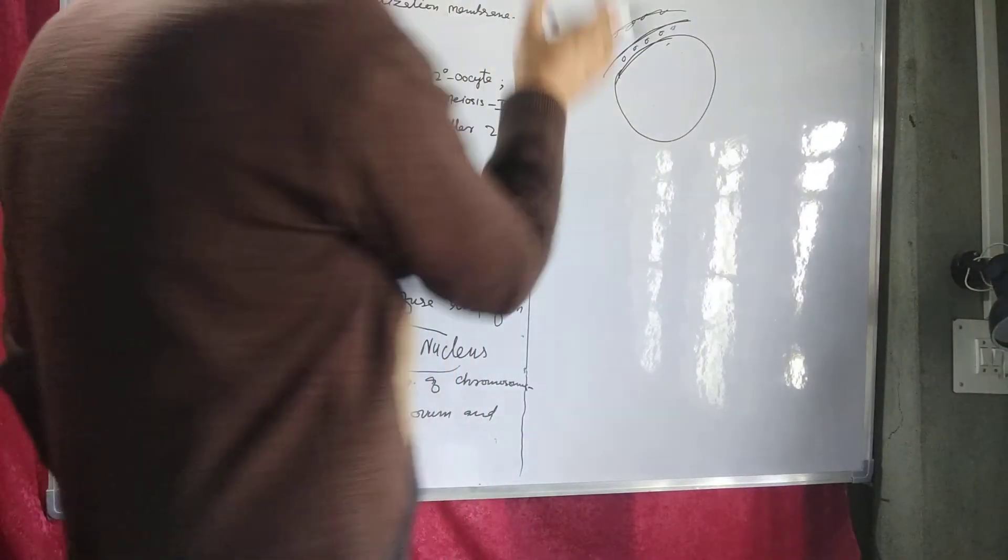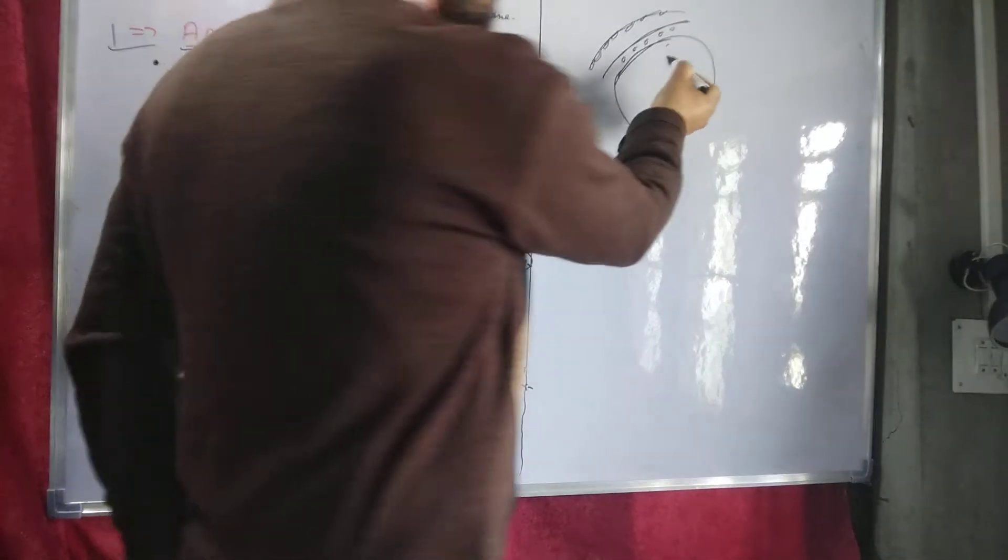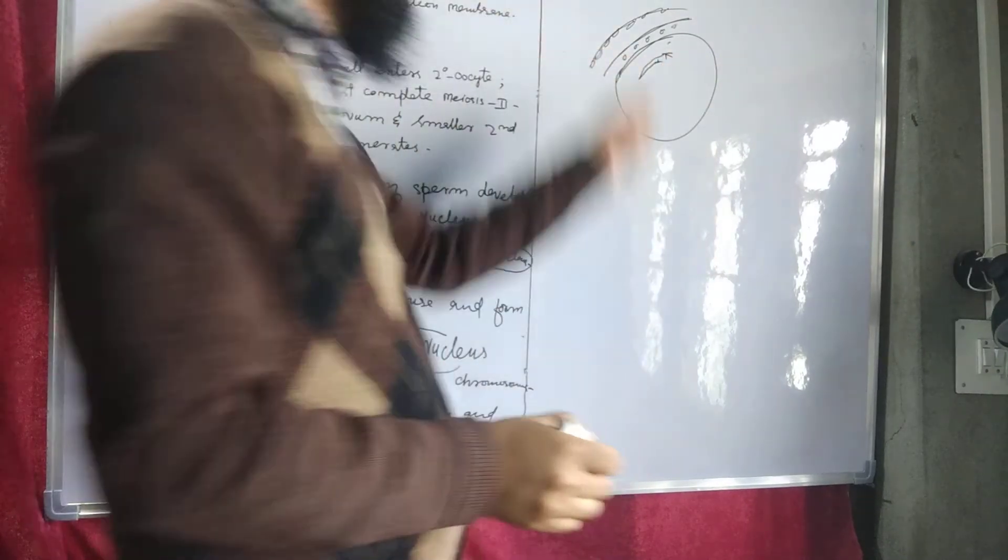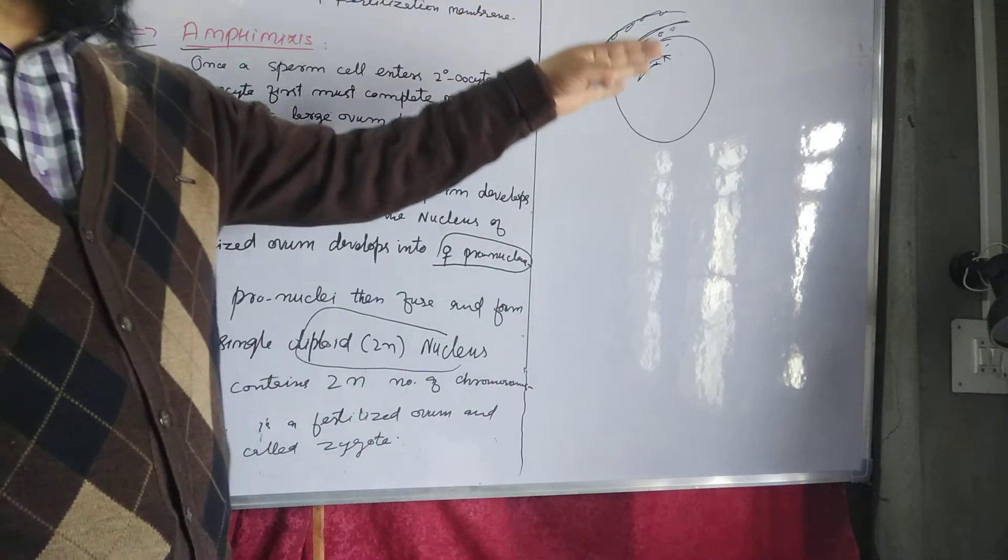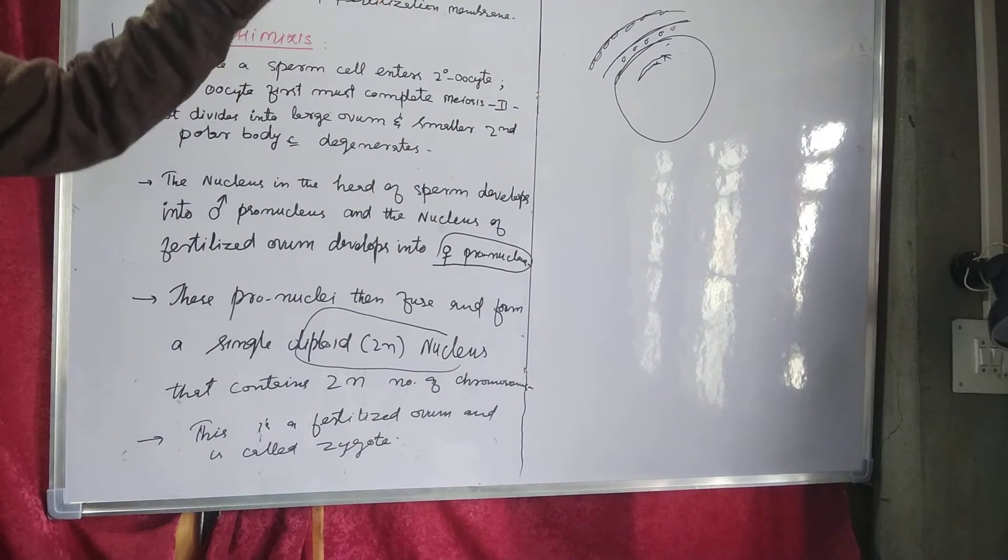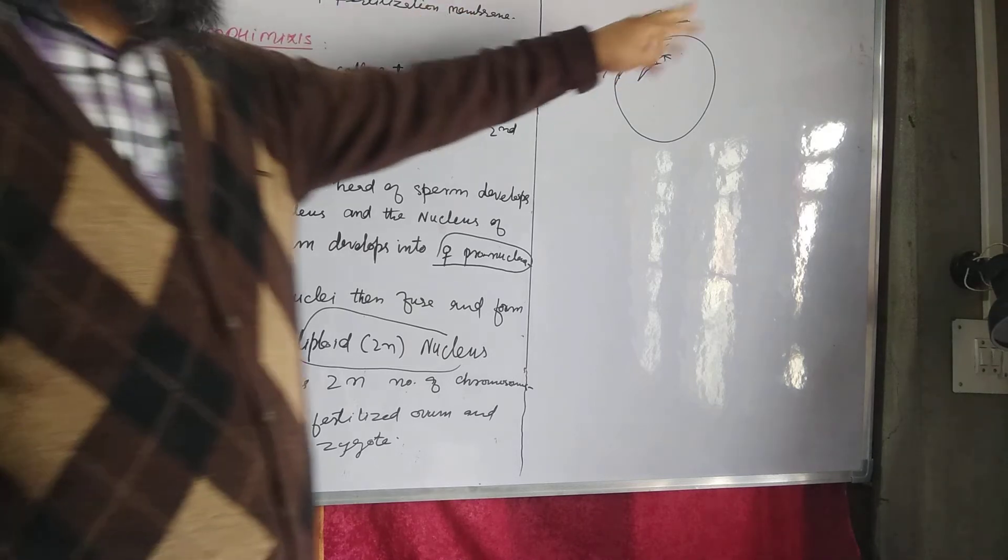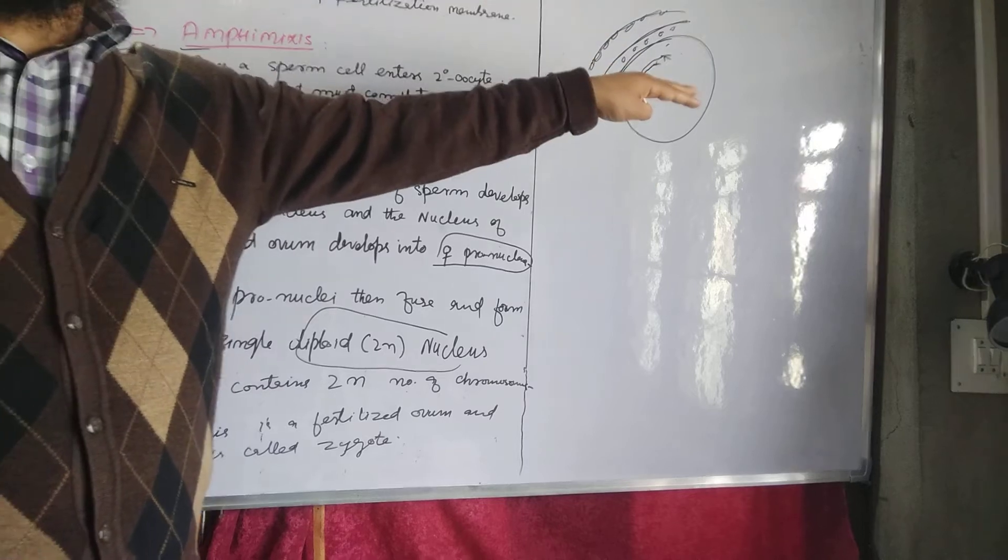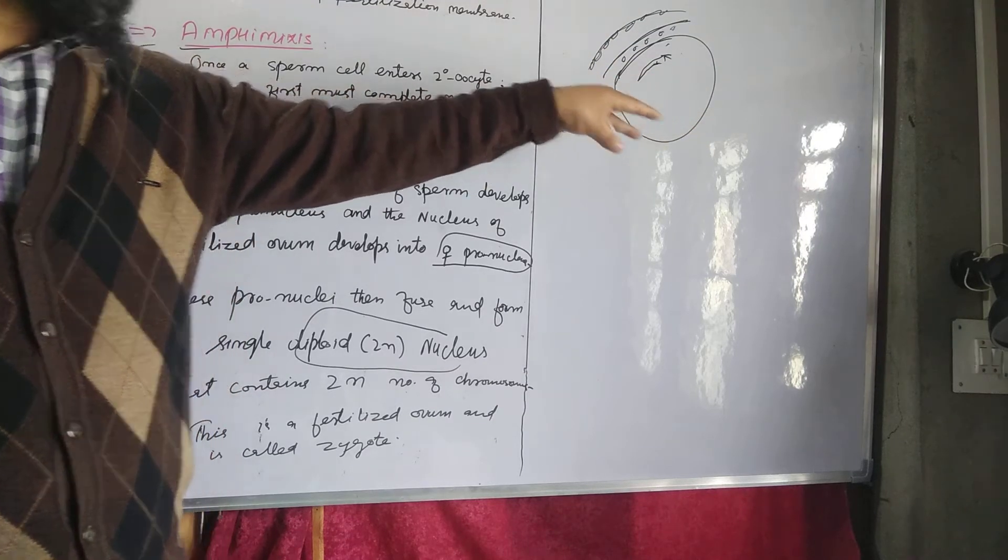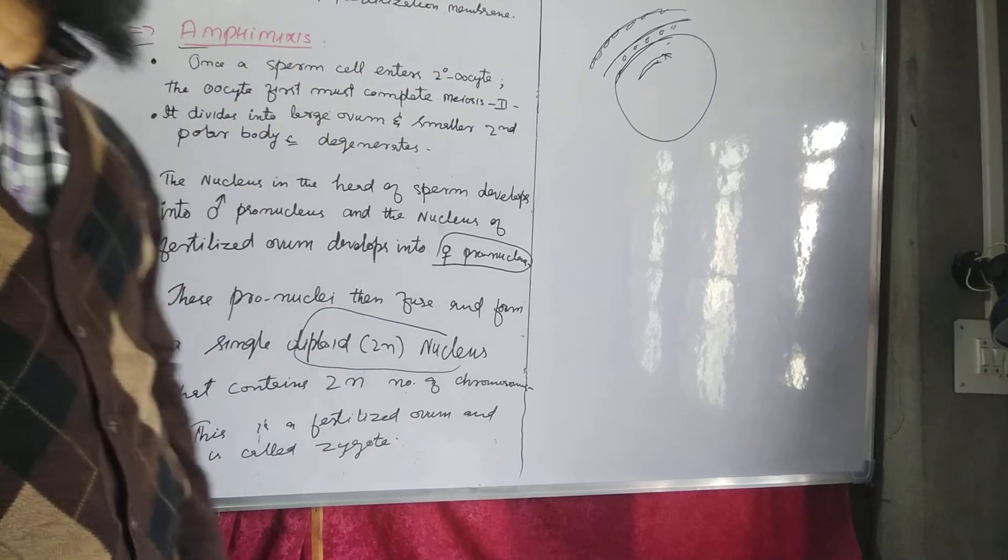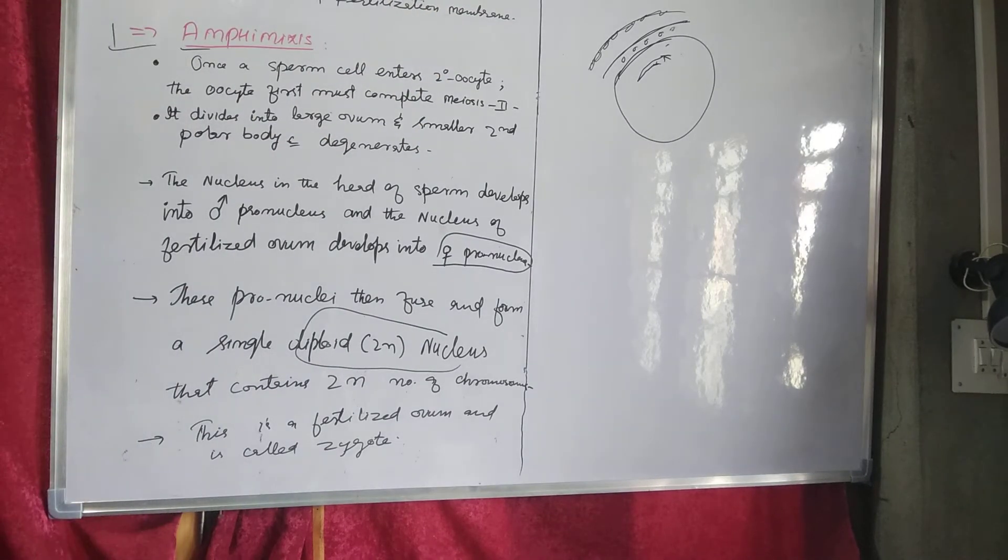And this is the smooth endoplasmic reticulum that releases calcium ions. So due to the influx of calcium ions, this sperm has entered into the secondary oocyte. The other sperm will not enter into the secondary oocyte. This is called a slow blocked polyspermia.